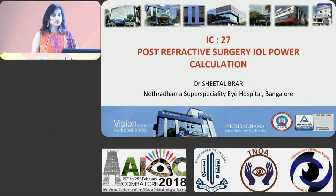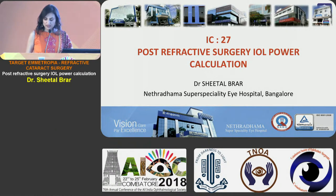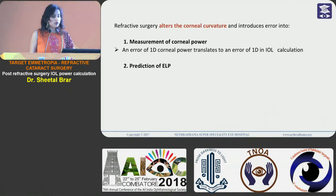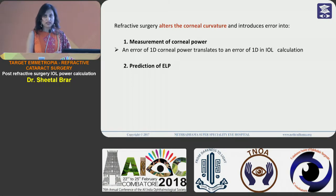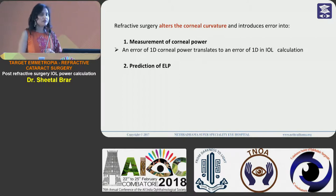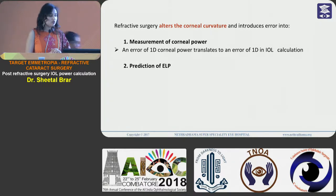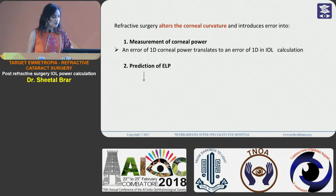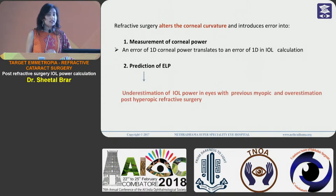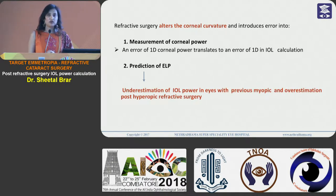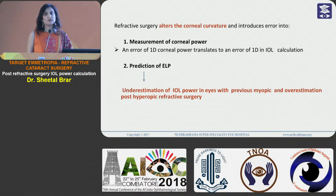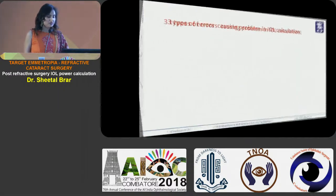Good morning dear friends. I'll be talking about post-refractive surgery IOL power calculations. We all know that refractive surgery alters the corneal curvature and shape, and when we are doing IOL power calculation after LASIK or any kind of refractive surgery, it introduces error into measurement of the true corneal power as well as prediction of the effective lens position. Both these factors lead to underestimation of IOL power in eyes with previous myopic refractive surgery and overestimation of IOL power in previous hyperopic refractive surgery eyes.